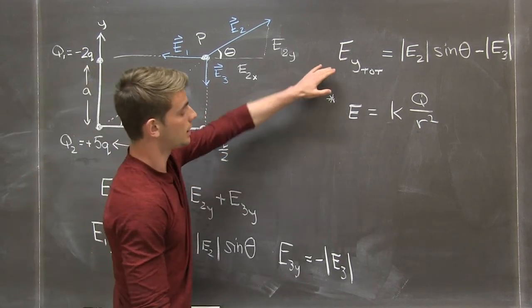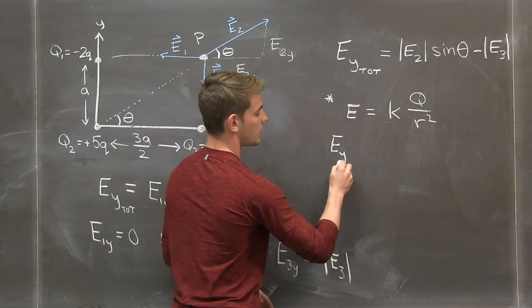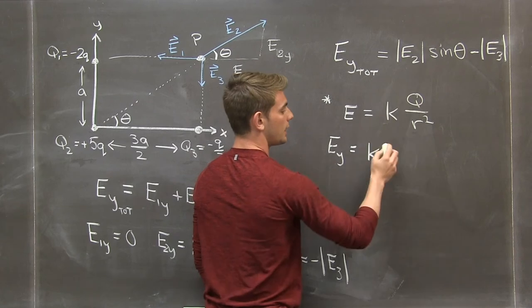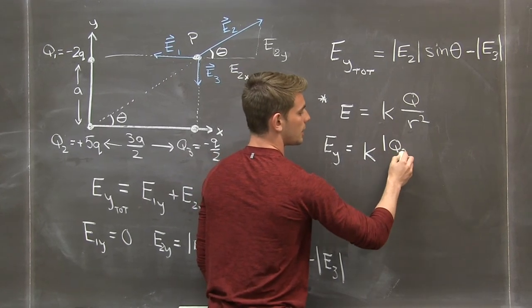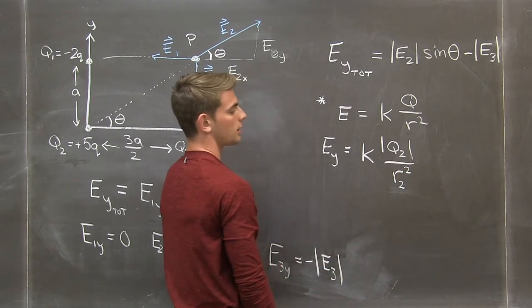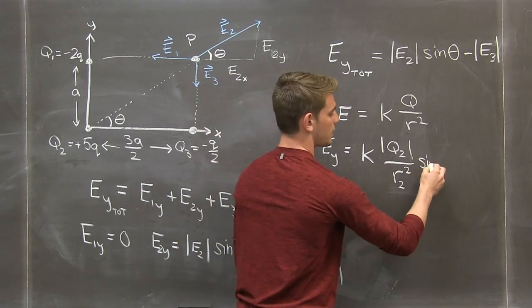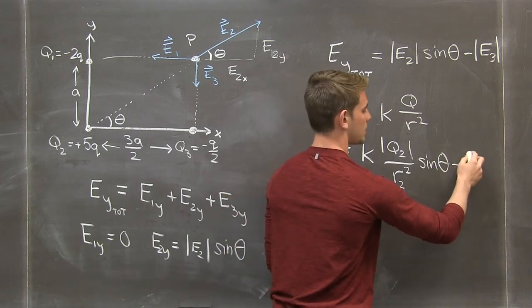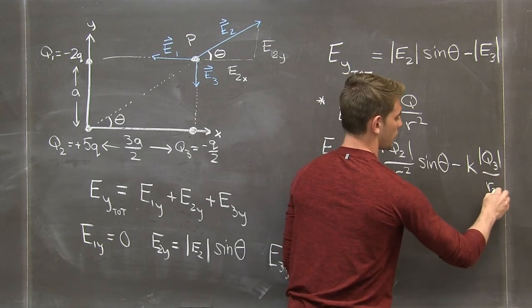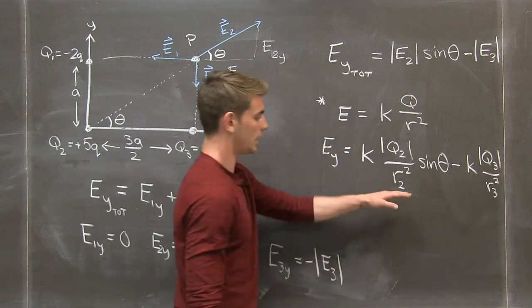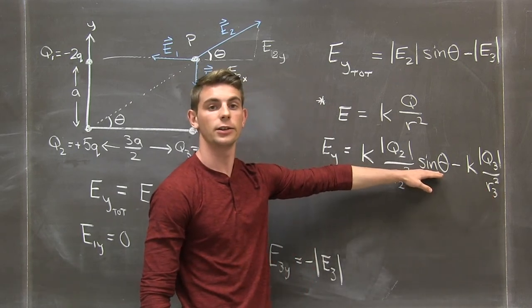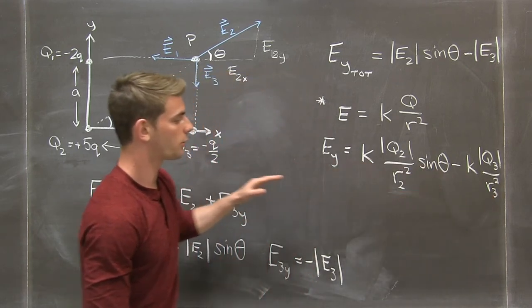So, we see that the y component then becomes a little more complicated. We have k, e2 is given by q2 over what I'll call r2 squared, sine theta minus k times q3 over r3 squared. Now, we haven't labeled what r2 and r3 are yet and we're not sure what sine theta is in terms of the quantities given, so let's refer back to our diagram.